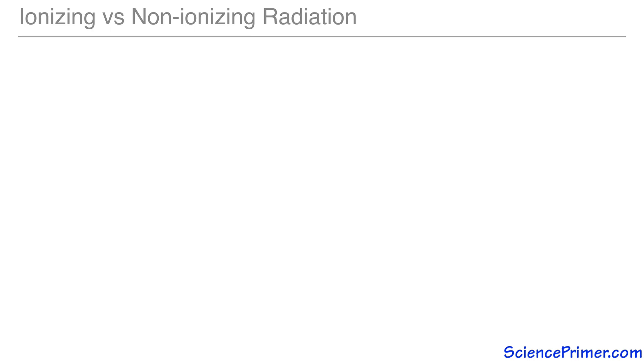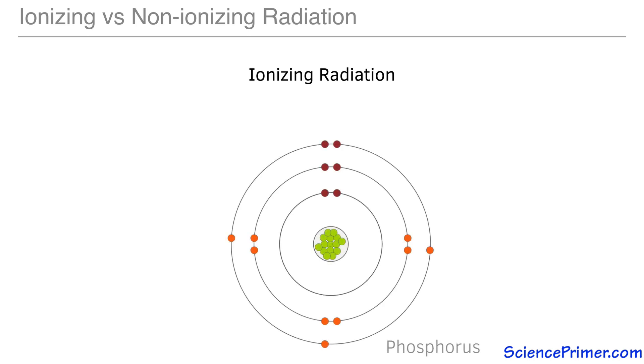Electromagnetic radiation is characterized as ionizing or non-ionizing based on how it interacts with matter. Ionizing radiation transfers large amounts of energy to matter when it is absorbed, which makes it dangerous.